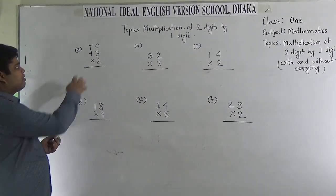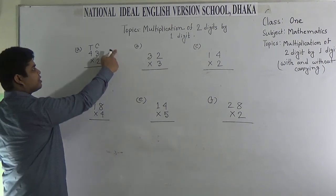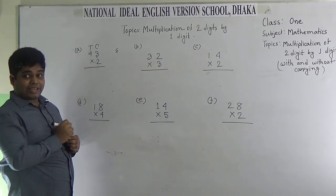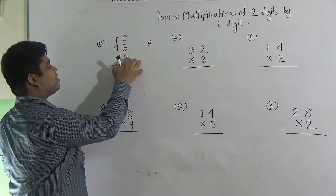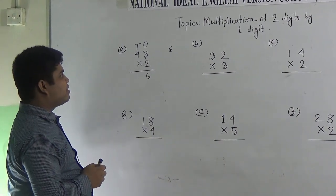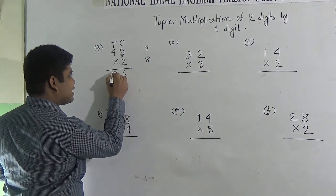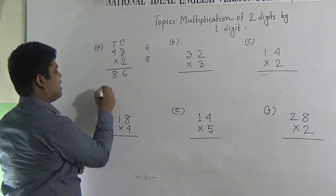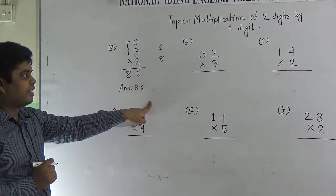In order to multiply 43 by 2, we must know the times table of 2. So, we count: 2 2's are 4 and 2 3's are 6. So, this 6 is placed in the 1's place. Now, we multiply 4 by 2. Again, we count the times table of 2: 2 1's are 2, 2 2's are 4, 2 3's are 6, and 2 4's are 8. 8 is placed in the 10's place. So, if we multiply 43 by 2, we get 86. 86 is the answer. Please write the answer carefully.